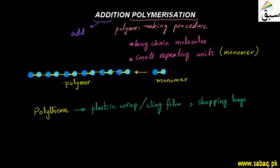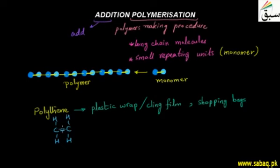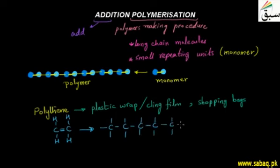We can see addition polymerization demonstrated with polythene. The monomer of polythene is ethene. Ethene has two carbon atoms connected by a double bond, with two hydrogen atoms attached to each carbon, satisfying the four bonds of carbon. The carbon-to-carbon double bond becomes single, giving each carbon an opportunity to form new covalent bonds.